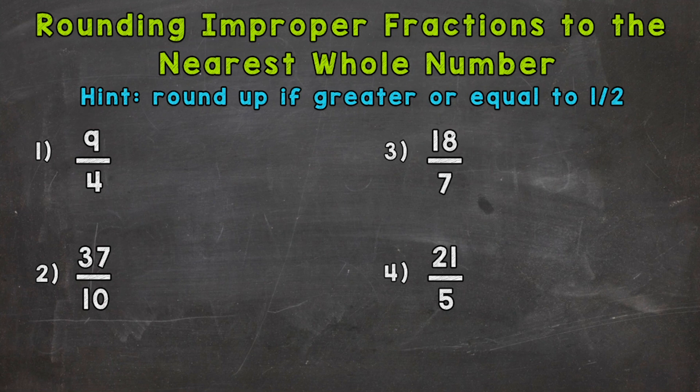So let's jump right into number one, where we have 9 fourths. And the first thing we want to do with these improper fractions is convert them to mixed numbers. We do that by dividing the numerator by the denominator. So how many whole groups of 4 can we pull out of 9? Well, 2. That gets us to 8, so we have a remainder of 1. And we keep this denominator of 4 the same. So we get to 2 and 1 fourth.